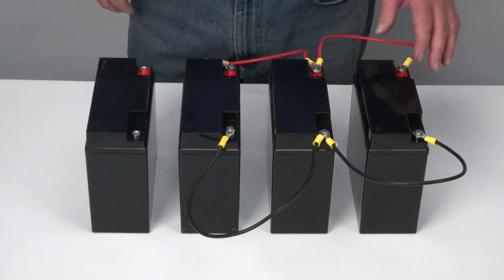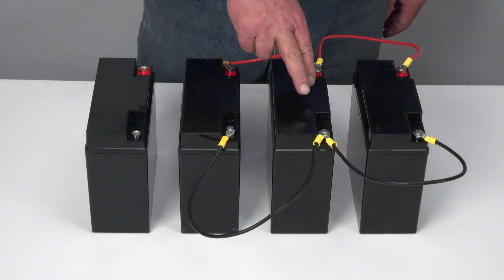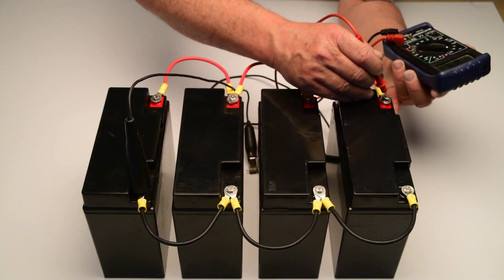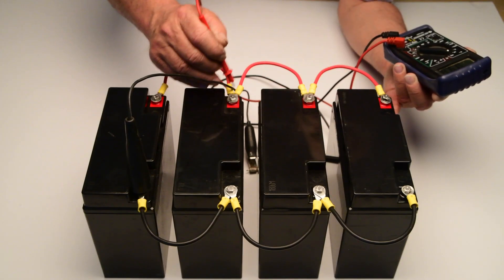And so now, instead of 20 amp hours, we have 40, 60 amp hours. The voltage remains constant at 12 volts.